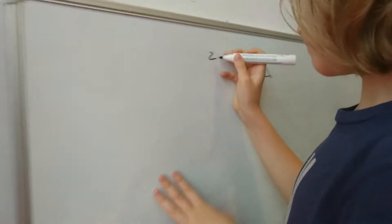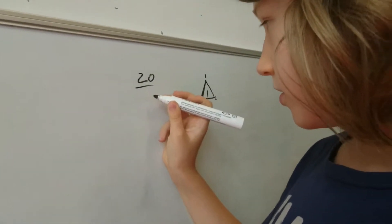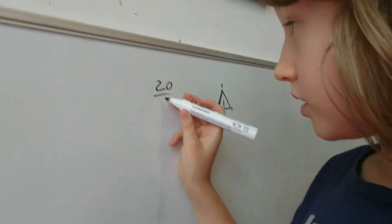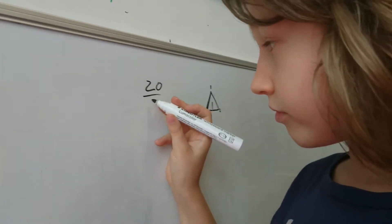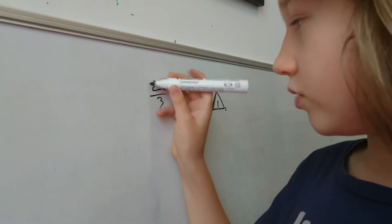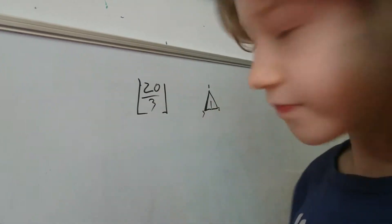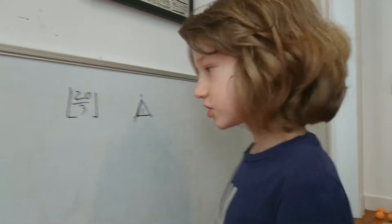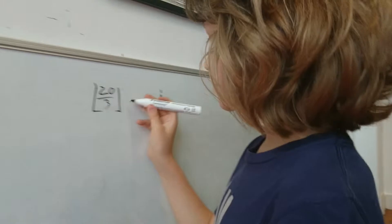And now I'm going to have 20 divided by three rounded down, and this is equal to six.